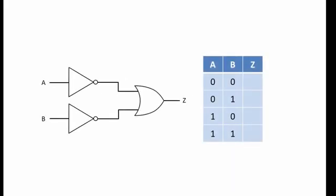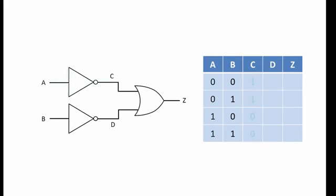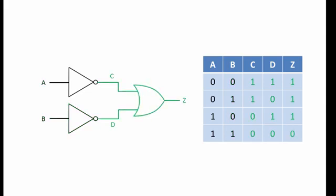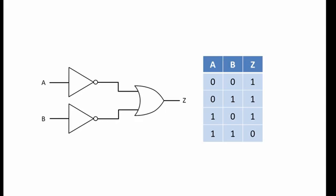Here is an example involving three logic gates. Values of A and B are being passed through NOT gates before being combined through an OR gate. To produce a truth table for this combination, it is useful to consider points C and D. Each value of C is simply the inverse of each value of A. Each value of D is simply the inverse of each value of B. And now that we have values for C and D, we can combine them through an OR gate to give us each value of Z. Here is our truth table. You might have noticed that this truth table is exactly the same truth table for the NOT AND combination that we saw earlier. It is not uncommon for different combinations of gates to produce the same output.